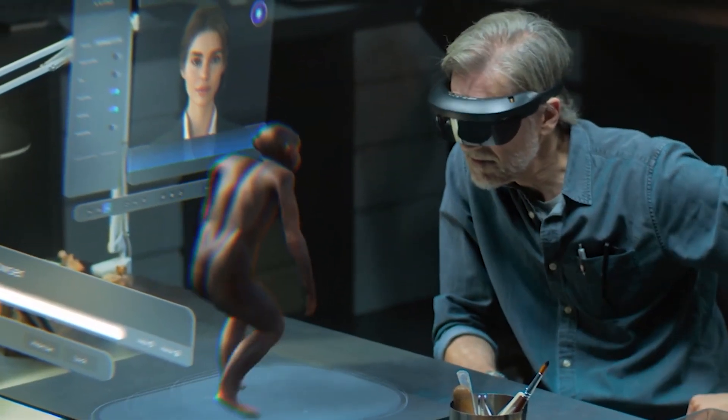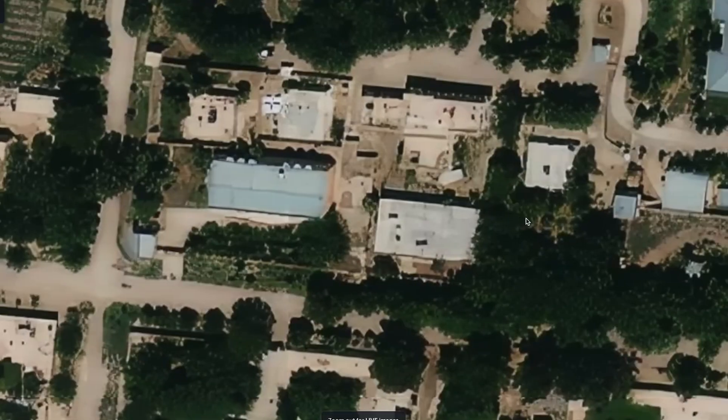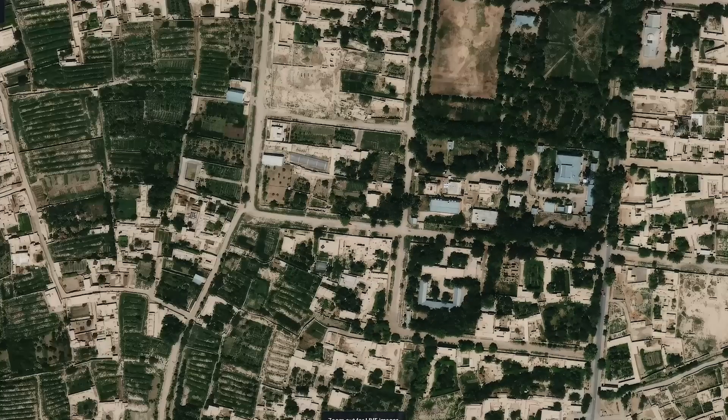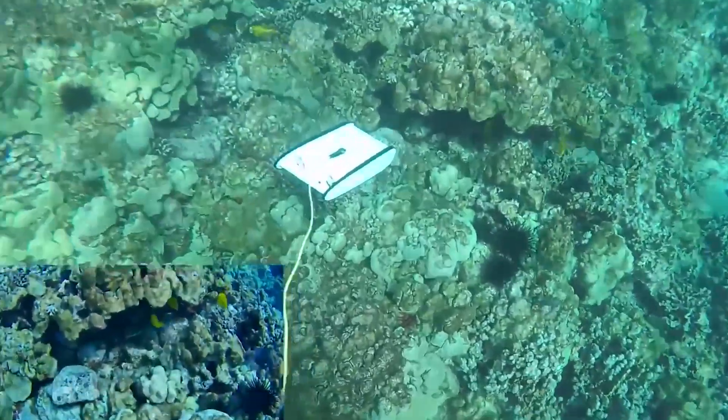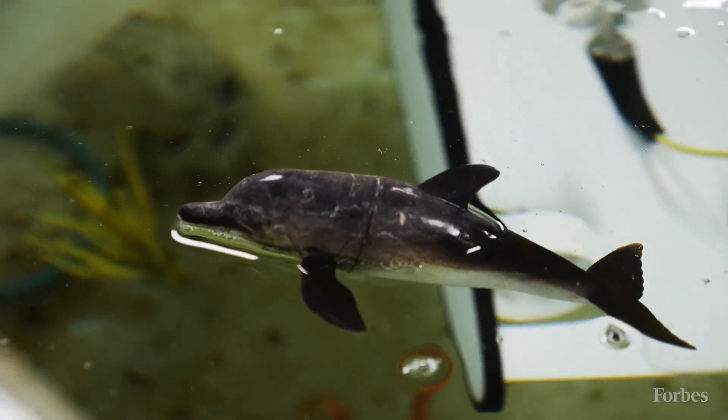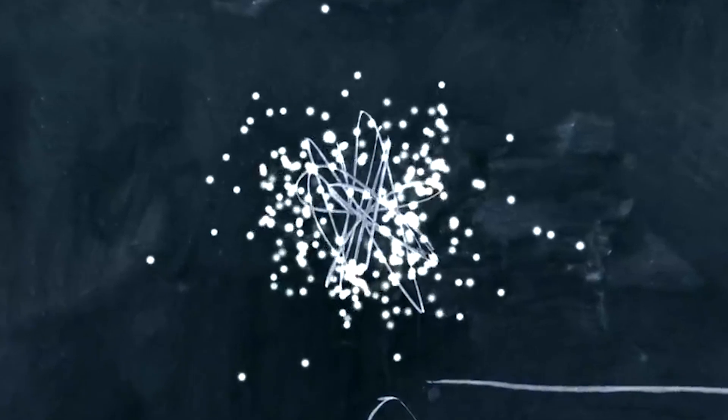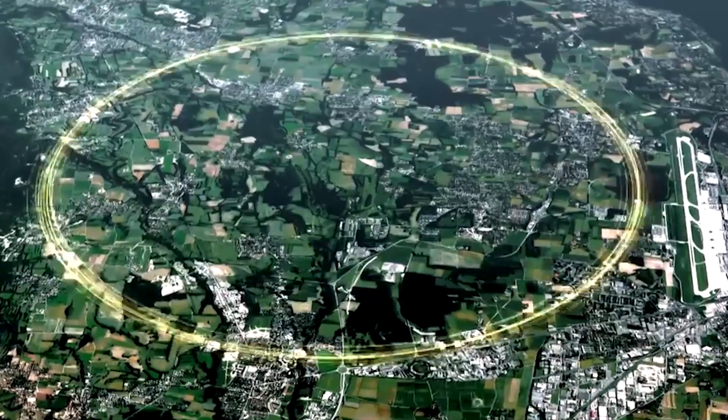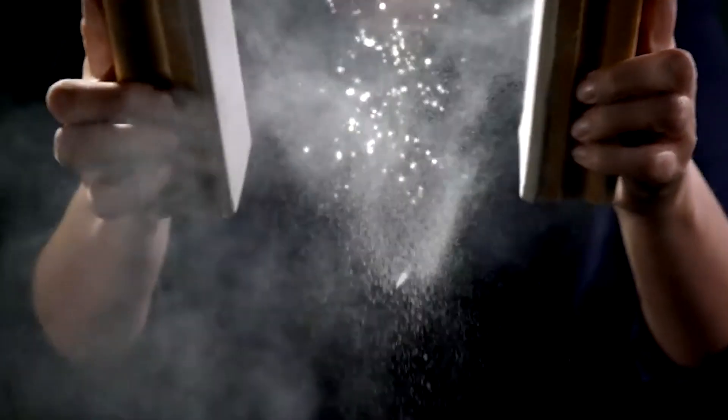In archaeology, AI systems are discovering ancient sites from space by analyzing satellite imagery. They've found thousands of previously unknown structures, from Roman roads to Mayan cities. The machines aren't just studying history, they're rewriting it. In the oceans, AI-powered drones are tracking illegal fishing fleets in real time. They're protecting endangered species and maintaining fish stocks with an efficiency no human patrol could match. At CERN's Large Hadron Collider, AI systems sift through millions of particle collisions per second, identifying patterns that could reveal the fundamental secrets of our universe. The machines aren't just observing reality, they're helping us understand its very fabric.